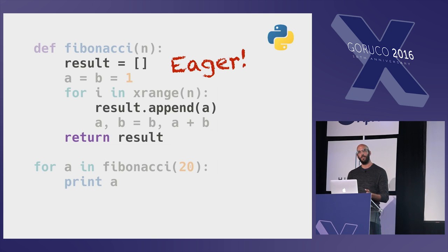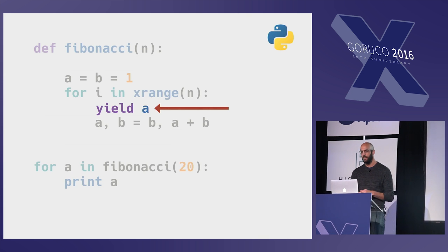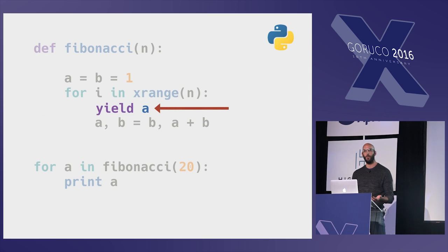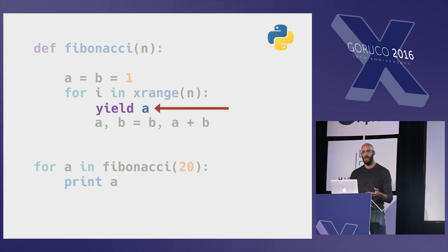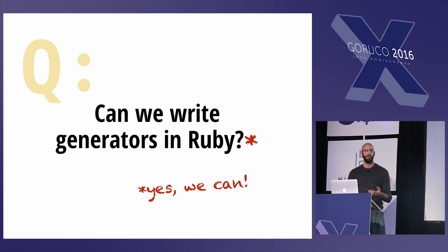Let's turn this into a generator. We replace our imperative eager list manipulation with a yield statement. In Python, this means the function now returns a generator object that can emit members of the sequence on the fly. It's now lazy — the generator won't produce values until they're needed for iteration.